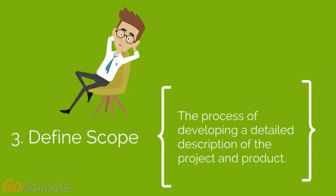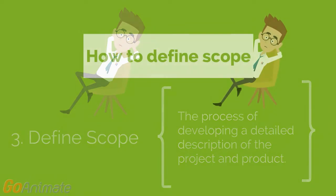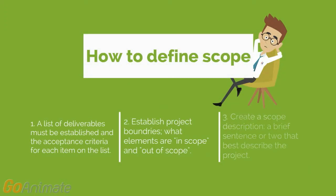The third point is defining the scope, which is the process of developing a detailed description of the project and product. To define the scope, a list of deliverables must be established as well as the acceptance criteria for each item on the list. Establish project boundaries — what elements are in scope and out of scope. Create a scope description: a brief sentence or two that best describes the project. Are you paying attention, Tim?